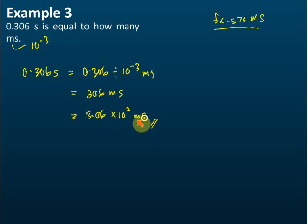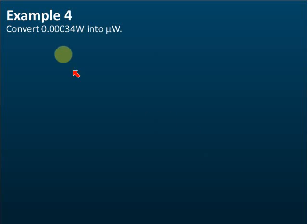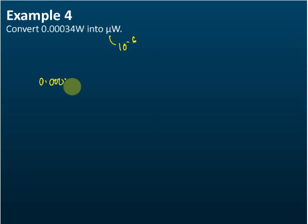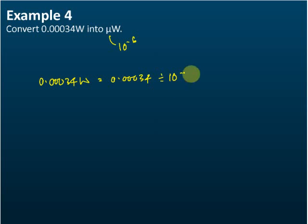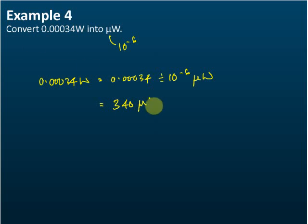Example 4: 0.00034 watts into microwatts. Micro equals 10 to the power of negative 6, so 0.00034 divided by 10 to the power of negative 6. The answer is 340 microwatts.